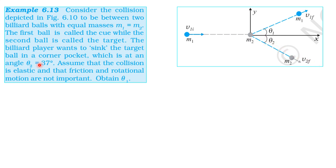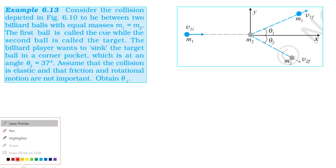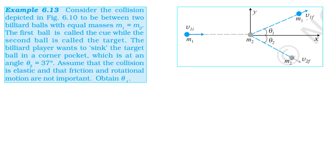Along the x-axis, we consider the initial velocity, which is the final velocity of the first particle, and the final velocity of the second particle relative to the initial velocity of the first particle. The final velocity of the second particle is directed at the given angle.